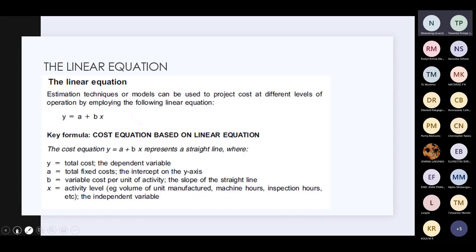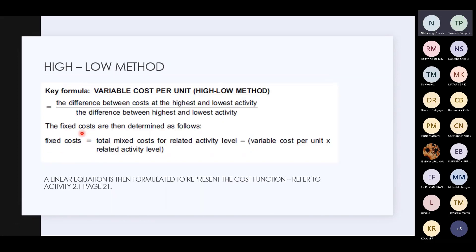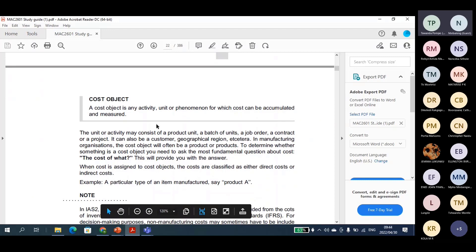Once you have B and you have Y (total cost), you need to find A — the total fixed cost. Fixed cost A = total mixed cost for a related activity (either the highest or the lowest observation) minus (variable cost per unit × related activity level). Let's go to activity 2.1, page 21 of your module.